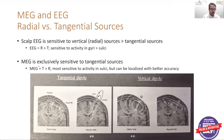MEG is sensitive to tangential sources. With a tangential source, the electrical activity travels more parallel to the scalp surface. An EEG electrode would not pick up the signal quite as well, whereas a SQUID located above this field would typically detect that magnetic field very well. So to reiterate: EEG is typically better at radial versus tangential sources, and MEG is typically better at tangential compared to radial sources.